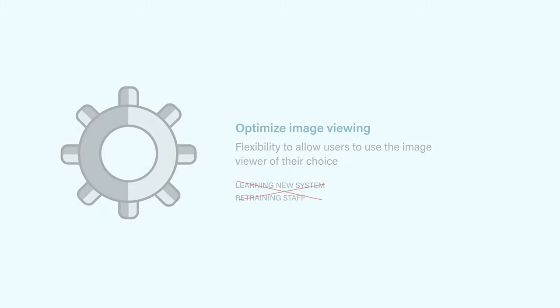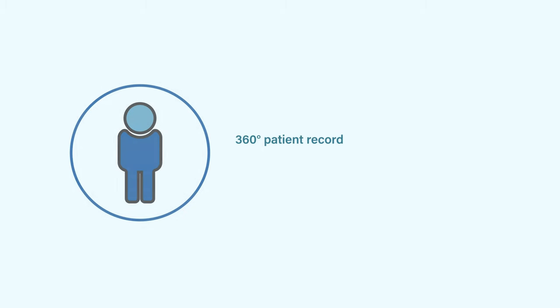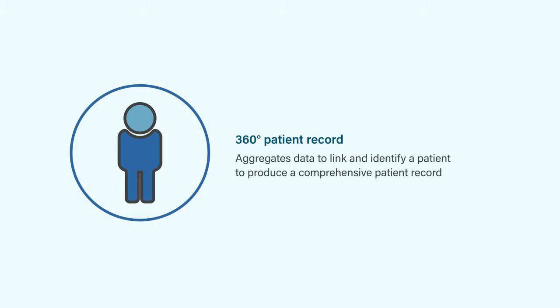The 360 degree patient record aggregates data to link and identify a patient to produce a comprehensive patient record. As long as studies are in Omega AI, users can view all the studies a patient has done in their life.